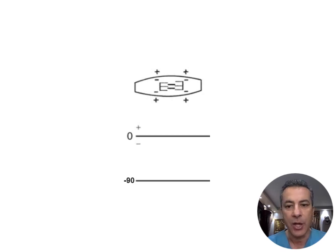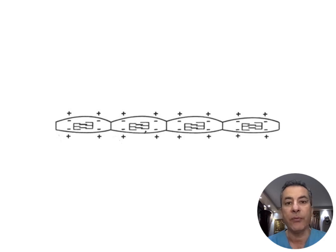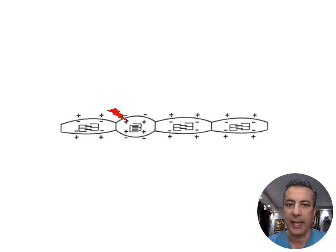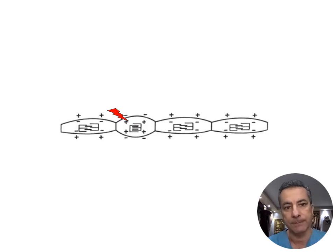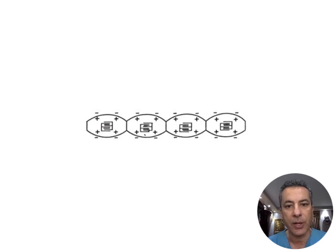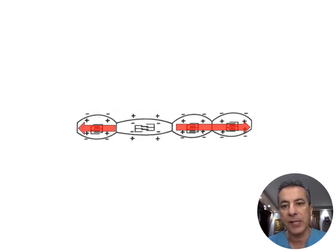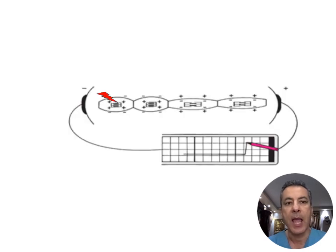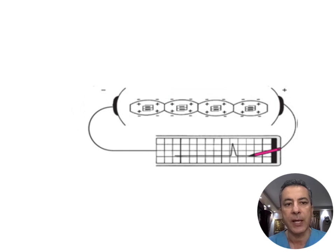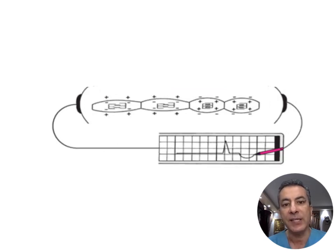The cell then returns to its polarized state, ready for the next cycle. When looking at a group of myocardial cells, we observe a consistent pattern: depolarization occurs sequentially, spreading along the group. Consequently, different cells exhibit various stages of depolarization, resulting in subtle potential differences across the group in a certain direction. The same process occurs during repolarization, but with potential differences in the opposite direction. Using a galvanometer across this group, we can record these minor potential differences during both depolarization and repolarization.